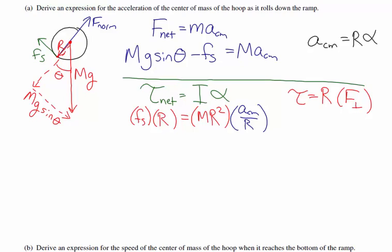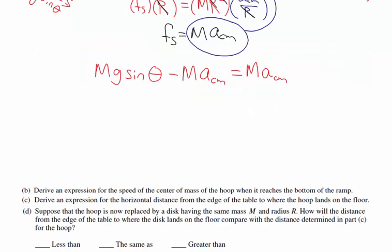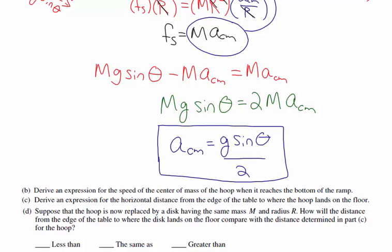Dividing both sides by R and simplifying, the torque equation gives: the force of static friction equals M times the acceleration. Substituting that into the Newton's second law equation: MG sine theta minus MA equals MA. Adding MA to both sides: MG sine theta equals 2M times the acceleration of the center of mass. Dividing both sides by 2M gives the acceleration as G sine theta over 2. That is the expression for the linear acceleration of the center of mass of this hoop.